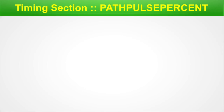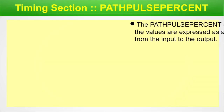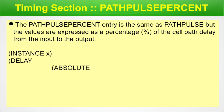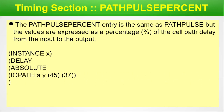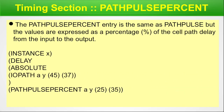Path pulse percent is another type of representation in the form of percentage. The path pulse percent entry is the same as path pulse, but the values are expressed as a percentage of the cell path delay from input to output. Example: INSTANCE X, DELAY, ABSOLUTE, IOPATH, then PATHPULSEPERCENT A Y (25)(35).